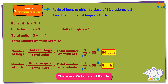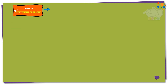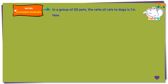That's really nice. In a group of 20 pets, the ratio of cats to dogs is 1 is to 4. How many cats and dogs are there?